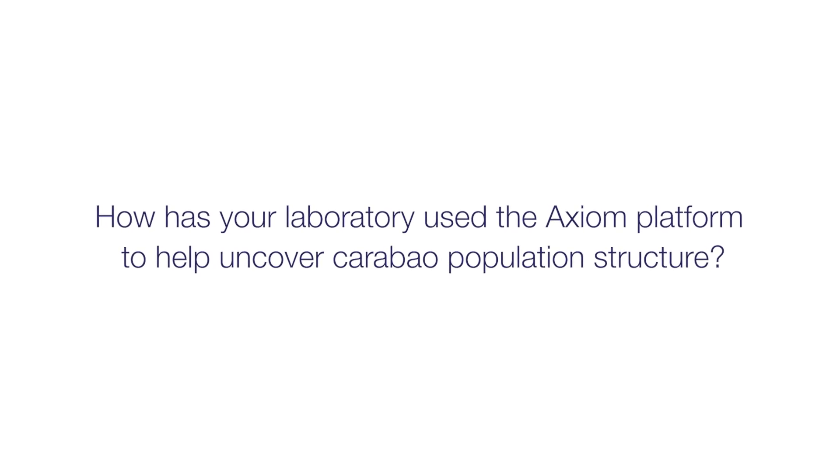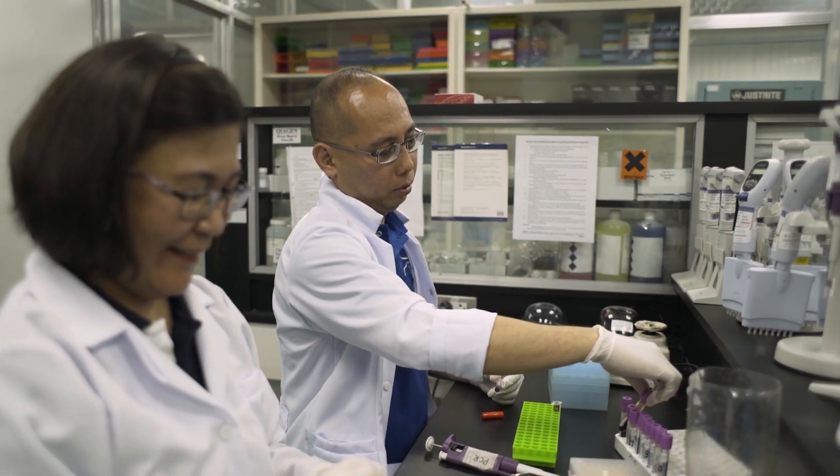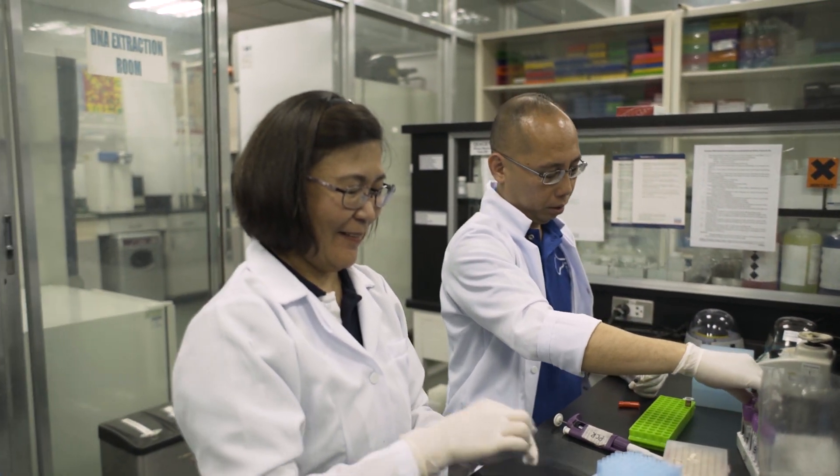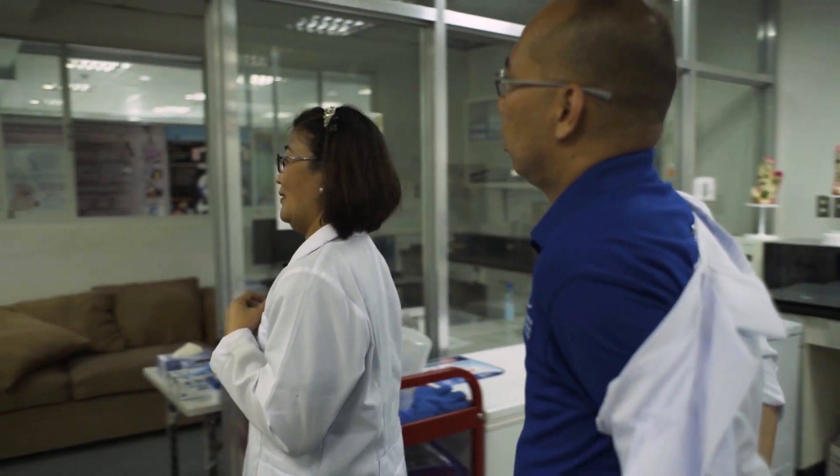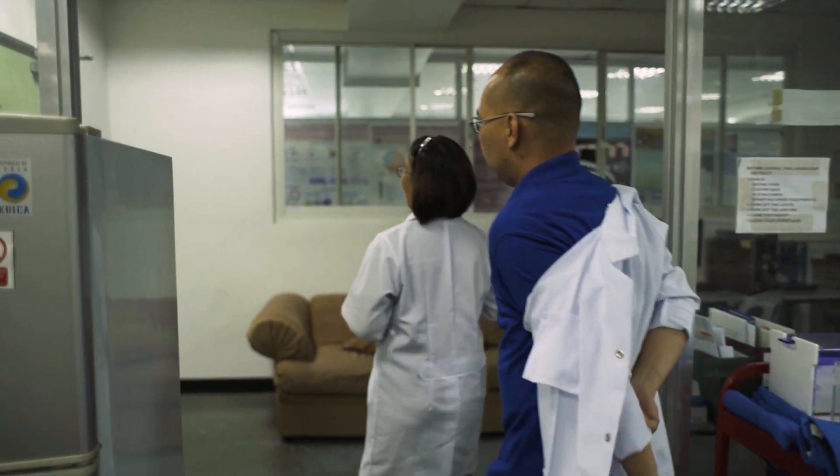I use the 90k genotyping array from Thermo Fisher for population structure analysis. I was able to separate the swamp buffalo from the riverine buffalo, and we have four different breeds here. We were also able to identify which animals I could use for genomic selection and which I could not.